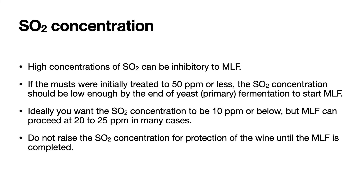The final factor is SO2 concentration. High concentrations of SO2 can be inhibitory to MLF. If the musts were initially treated to 50 parts per million SO2 or less, then the SO2 concentration should be low enough by the end of primary fermentation to allow MLF to start. Ideally, you want SO2 concentrations to be 10 parts per million or below, but MLF can proceed at 20 to 25 parts per million in many cases. Do not raise your SO2 concentrations to protect your wine until the MLF is completed.